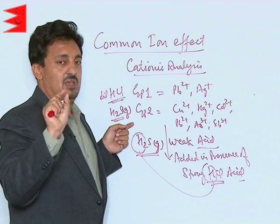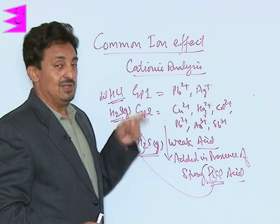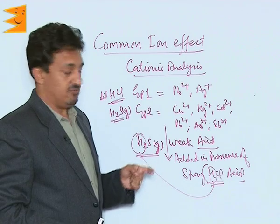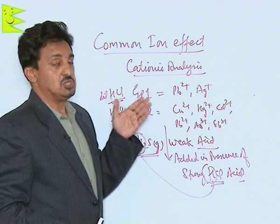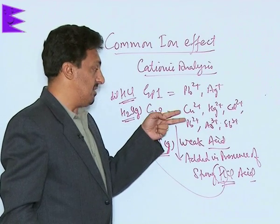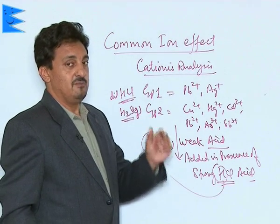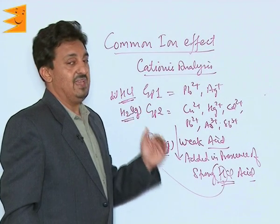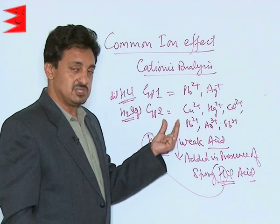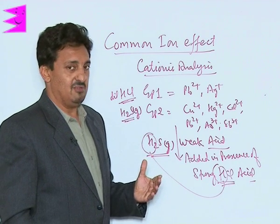The dissociation of H2S is suppressed because we need only a very small amount of sulfide ions — sufficient to precipitate out only the Group 2 cations. Group 4 also uses H2S as the group reagent for zinc, manganese, cobalt, and nickel. Since Group 4 cations have a higher solubility product than Group 2 cations, H2S dissociation is deliberately suppressed by adding it in the presence of HCl, generating only enough sulfide to precipitate Group 2 and not Group 4.